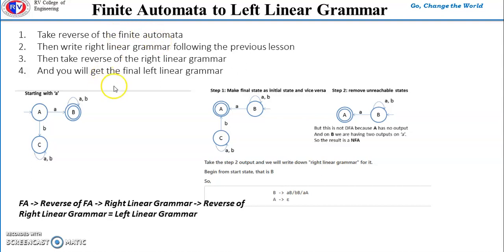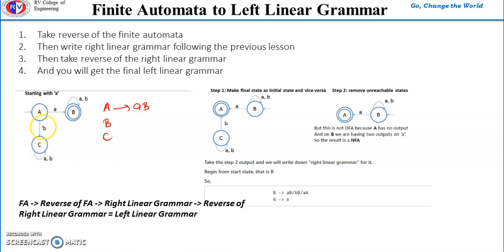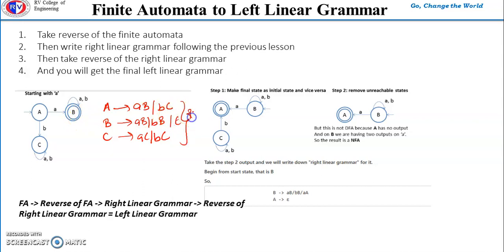When we do finite automata to right linear grammar, we write one non-terminal per state. In this example, we have three states A, B, and C, so we write three non-terminals. From state A to B there is a transition for input A, so we write A → aB. From A to C for input B, we write A → bC. From state B to itself for inputs A and B, we write B → aB and B → bB. From C, we write C → aC and C → bC. Since B is the final state, we add epsilon. This is the right linear grammar.